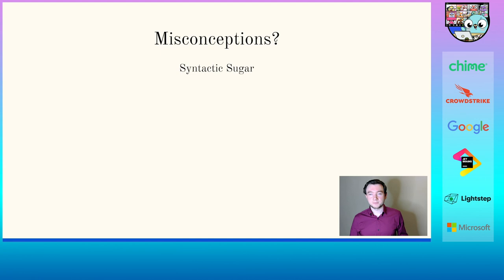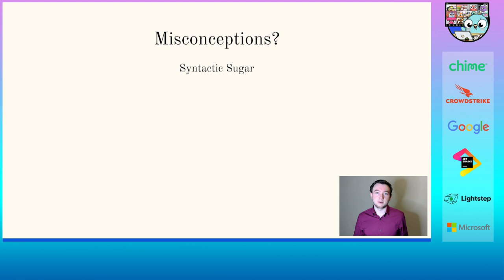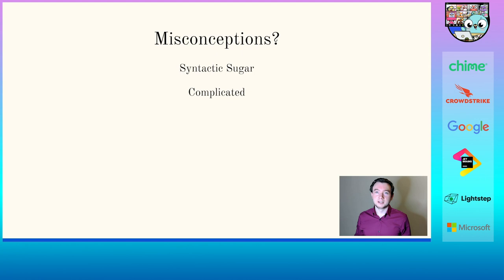There are also some misconceptions I want to highlight. One is that people equate functional programming with the syntactic sugar those languages have for certain concepts. For example, people might say you can't have lambda expressions in Go — what they really mean is that you don't have the lambda arrow syntax. That's true, but the syntactic sugar is not necessary for many of the things we'll see. People also might think of functional programming as something complicated, mostly due to learning object-oriented languages first.